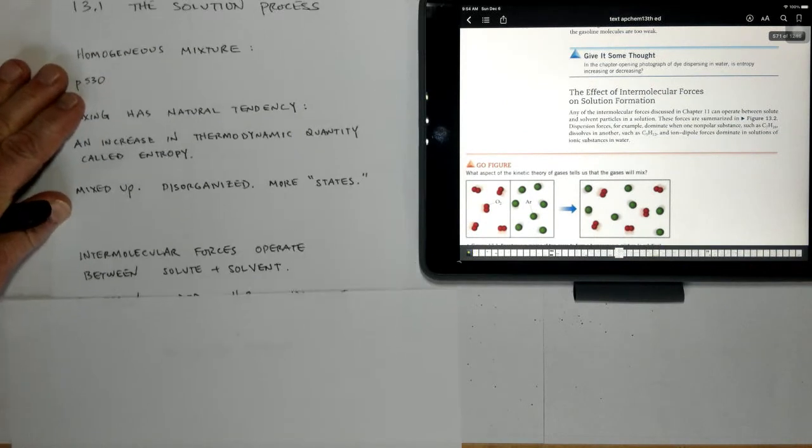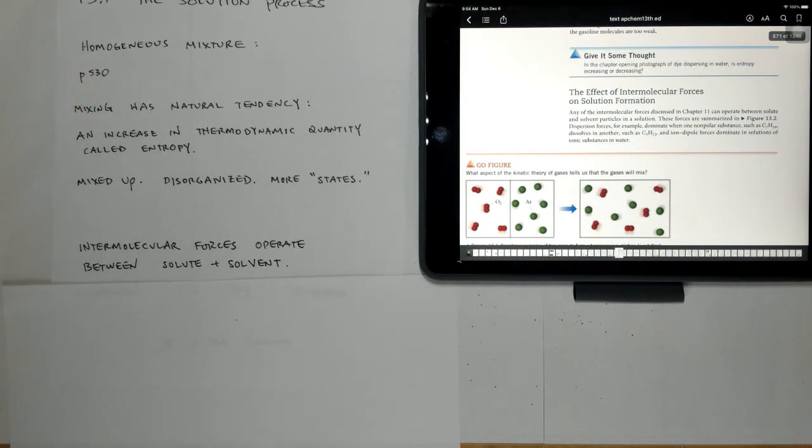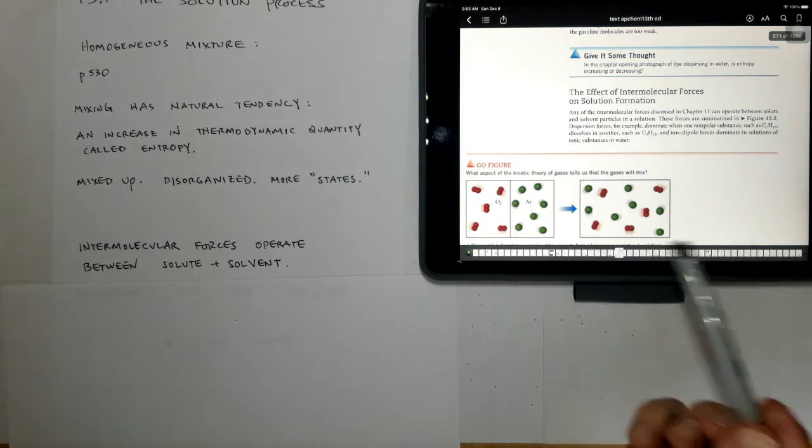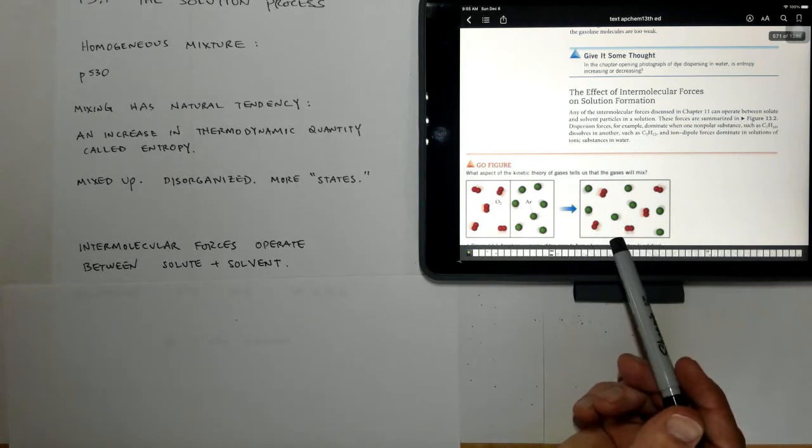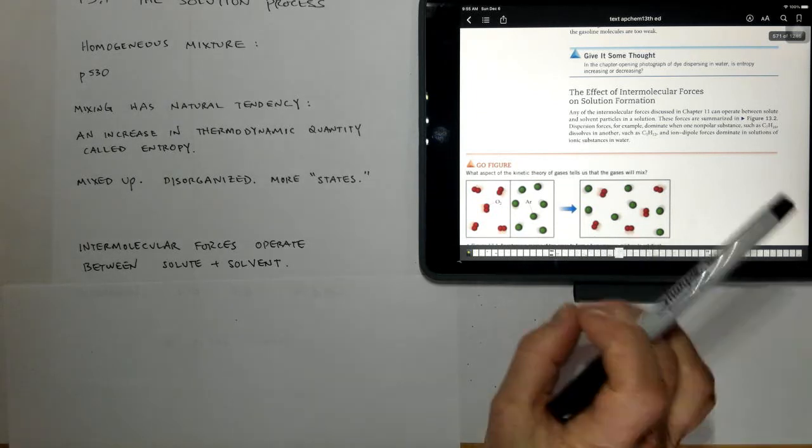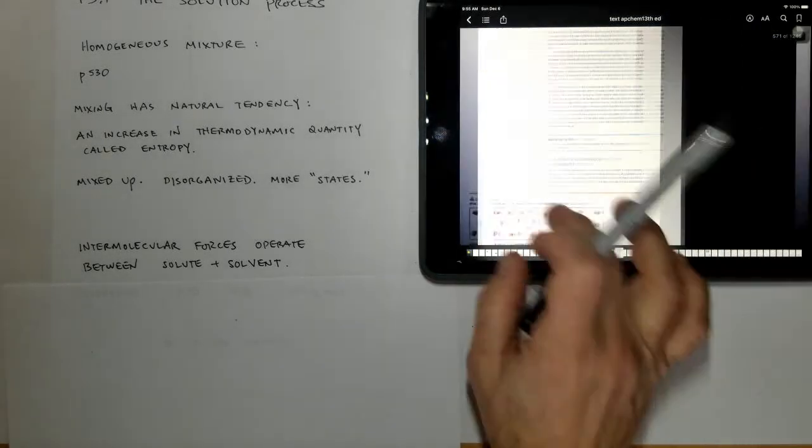So intermolecular forces operate between solutes and solvents. And solute, of course, is the substance that's being dissolved. Solvent is the substance that is usually present in larger quantity and does the dissolving. Think of salt and water. The water is usually the solvent and the solute would be the salt. Argon and oxygen mixing in this picture right here, I don't know which one is the solute and which one is the solvent. It's probably interchangeable. You could define it whichever way you want, but one is dissolved inside of the other.